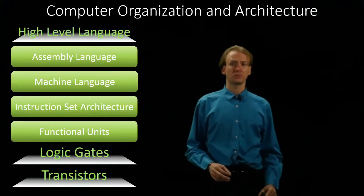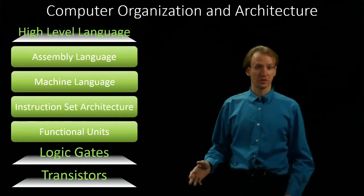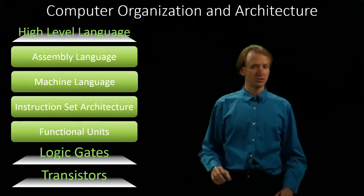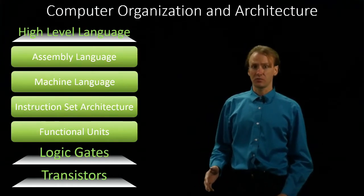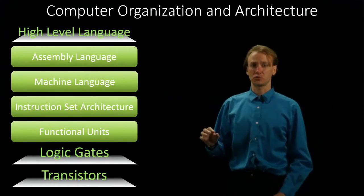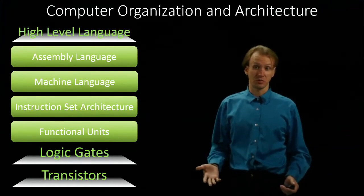We can think of a computer at several levels of abstraction. Each layer builds upon the layer below it and usually doesn't interact with the deeper layers. This means that at each level, we only need to know a little bit about how the computer works to produce useful solutions to our problems.